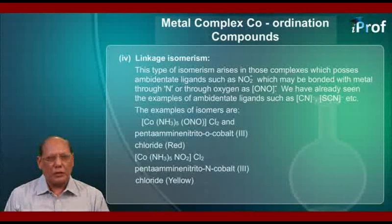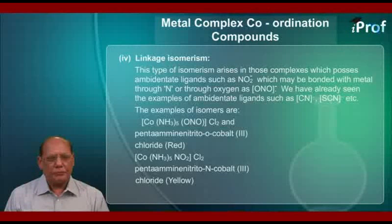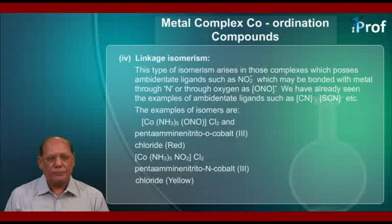The examples of linkage isomers are [Co(NH3)5ONO]Cl2, whose IUPAC name is Pentaaminenitrito-O cobalt(III) chloride — it is of red color. Its isomer is [Co(NH3)5NO2]Cl2, whose IUPAC name is Pentaaminenitrito-N cobalt(III) chloride, and it is of yellow color.